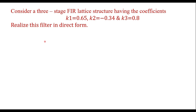In this video, we will consider one example to convert a lattice structure into direct form. Consider a three-stage FIR lattice structure having the coefficients k1 equal to 0.65, k2 equal to minus 0.34, and k3 equal to 0.8. Realize this filter in direct form.